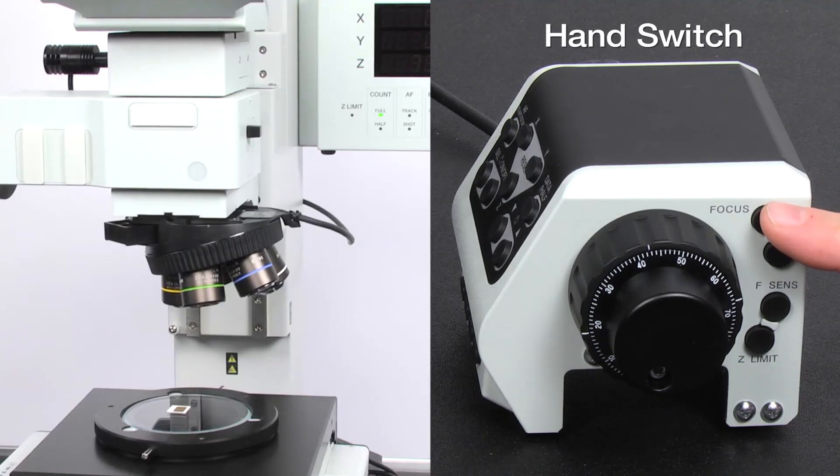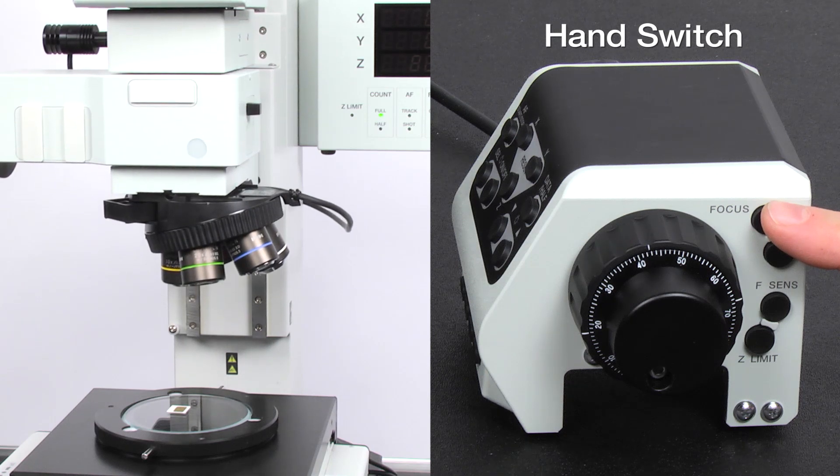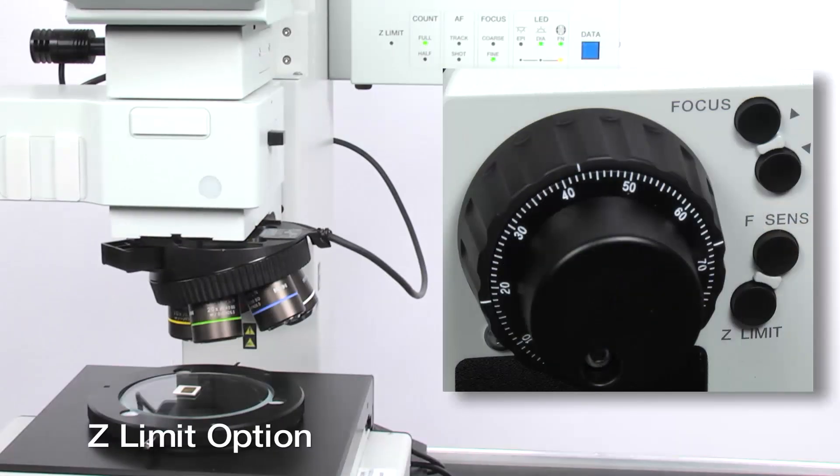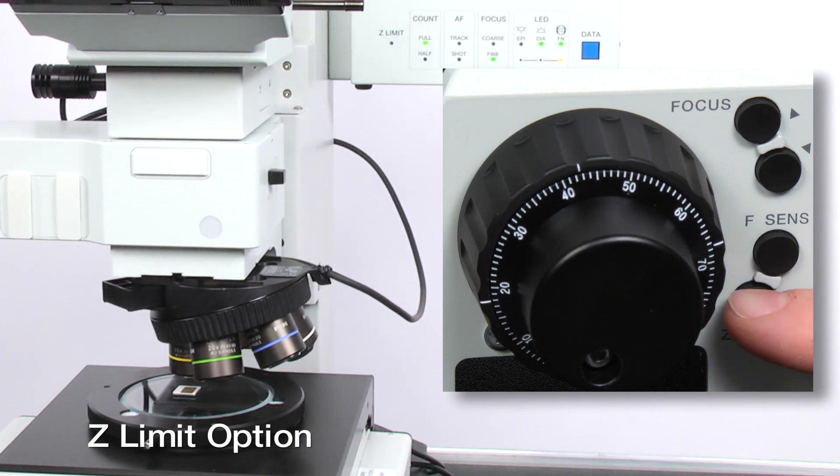With a motorized frame, a convenient hand switch controls all height movement, while the Z-limit option keeps the objective lens from hitting the sample.